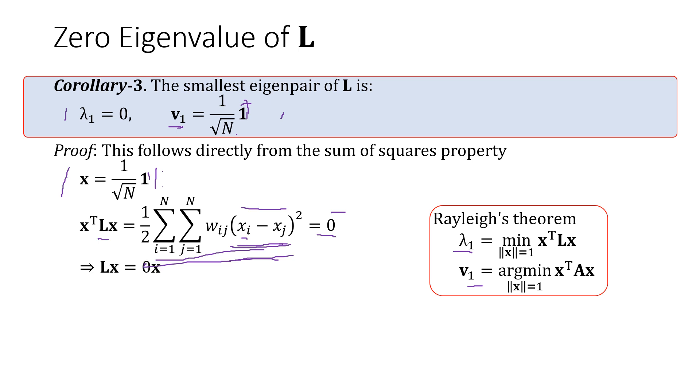So Lx equals zero x. Hence, v1 equals 1 over square root of n of a vector of all ones is an eigenvector. And lambda 1 equals zero is an eigenvalue. Lambda 1, v1 belongs to the spectrum of this matrix L.